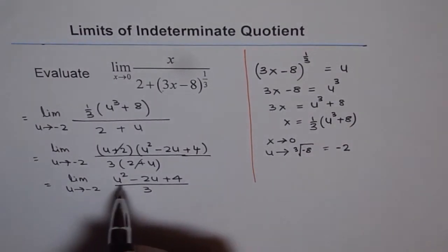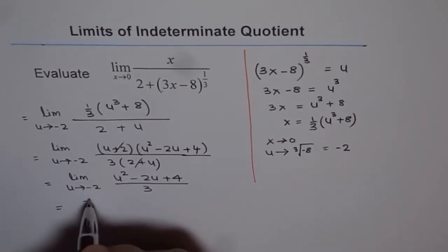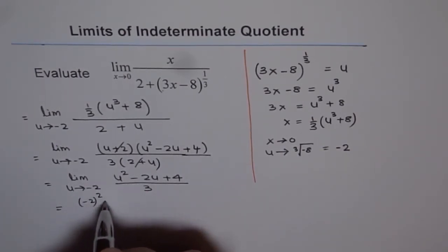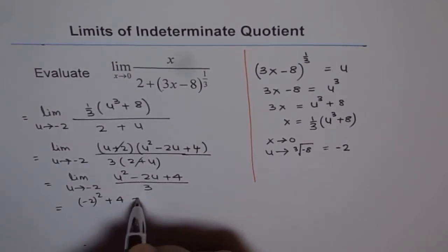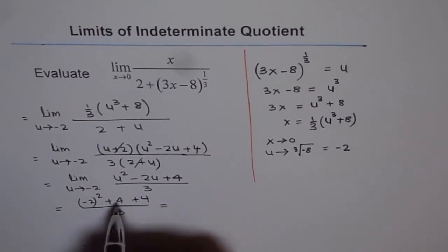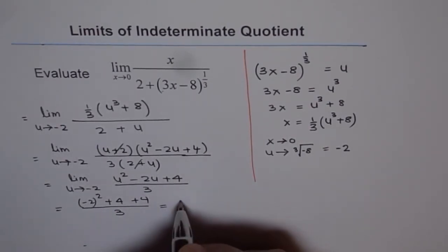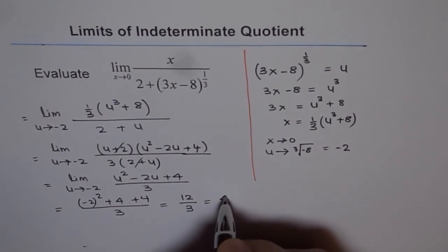Now we can substitute minus 2 and get our answer. So if I do minus 2 square minus 2 here, I get plus 4 and then plus 4 over 3. And that is 4 plus 4, 8. And this is also 4, 12 over 3.